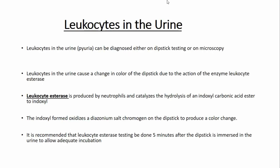Leukocytes in the urine can be detected by two methods: dipstick — an indirect way — and microscopy. In the dipstick, the leukocyte esterase enzyme in leukocytes produces a color change by catalyzing the hydrolysis of indoxyl carbonic acid to an indoxyl group, which then oxidizes a diazonium salt present on the dipstick to produce the color change. This is how leukocyte presence is detected by dipstick.